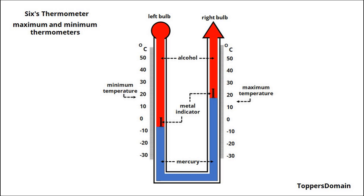This thermometer consists of two separate columns, each filled with either mercury or alcohol. These liquids are chosen for their ability to expand and contract with changes in temperature.